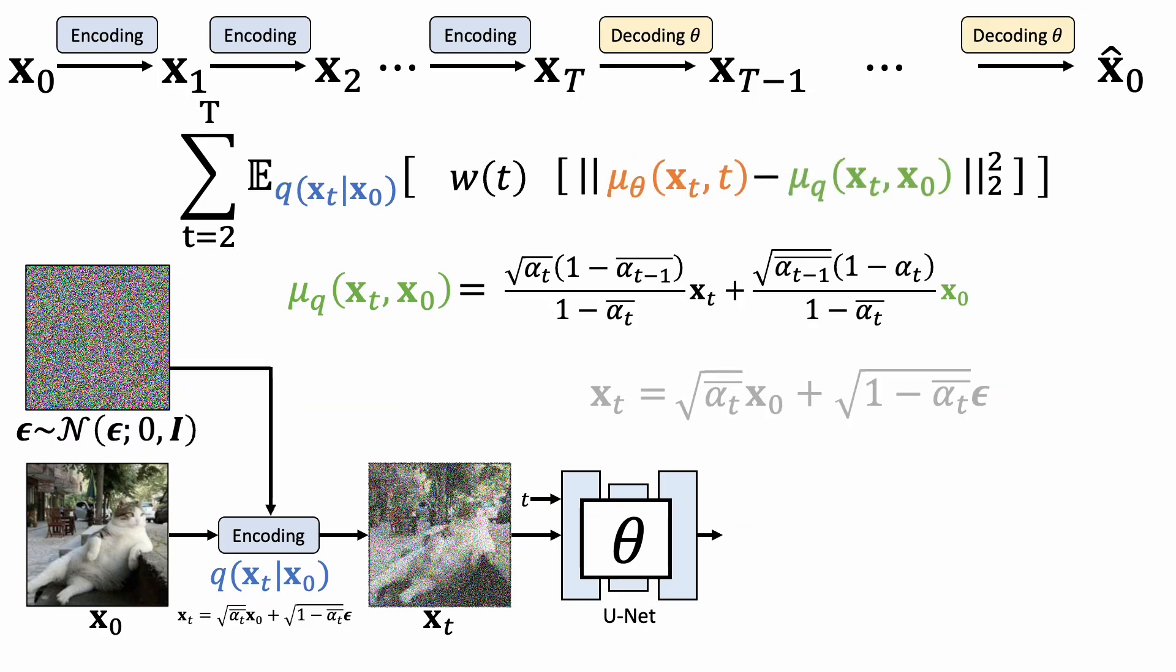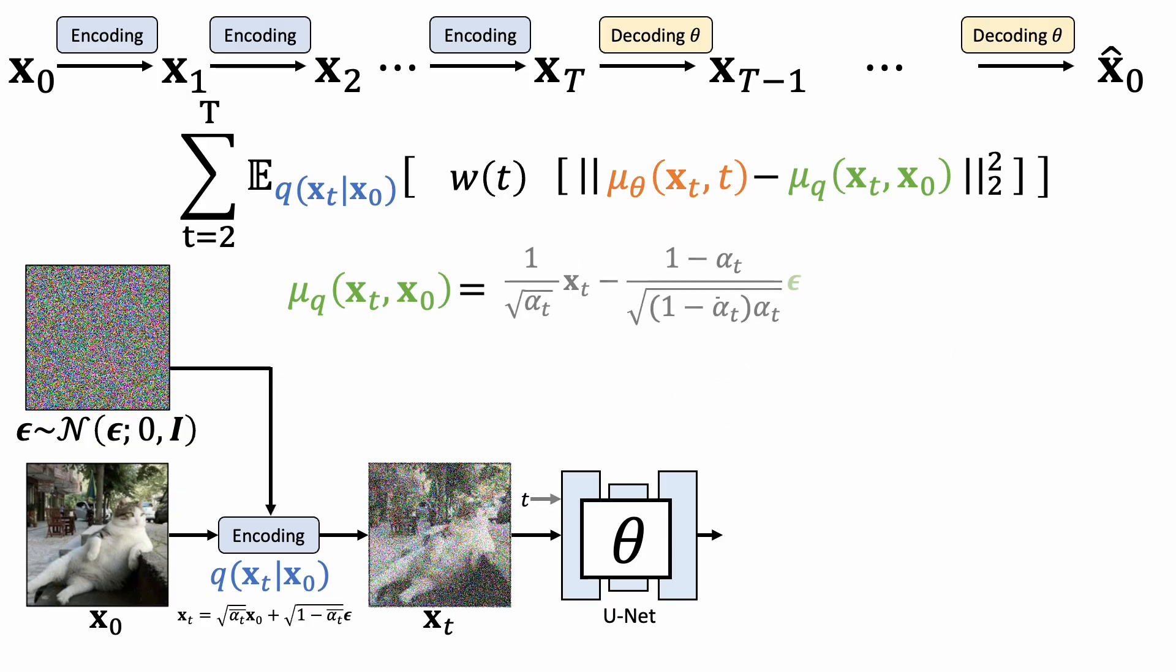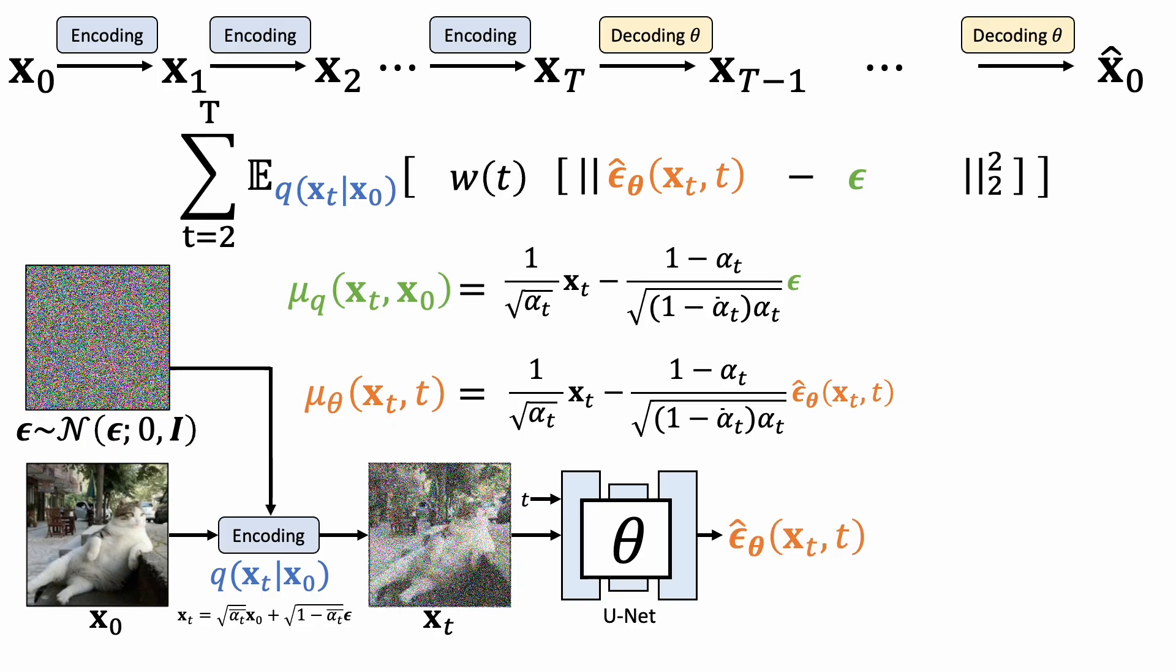Second, from the forward diffusion process, we know the relationship between the noisy image, the clean image, and the added noise. We can express the clean image x0 as a function of a noisy image xt and the noise epsilon. When we plug this in, we arrive at this new form of ground-truth mean. Similarly, we can match the form of the estimated mean with the ground-truth one, and only ask the denoising network to predict the noise.